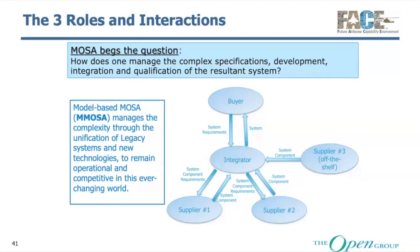As part of the three roles of interactions, we present a very simple case of the buyers, suppliers, and integrators. You might note on supplier three that some of these are off-the-shelf components. The idea is how to pull all this together from your specification, how to integrate those, and of course what the suppliers need to do. As Captain Wilson mentioned a little earlier, one of the things with MOSA — the modular open systems approach — it really begs the solution of model-based systems engineering.